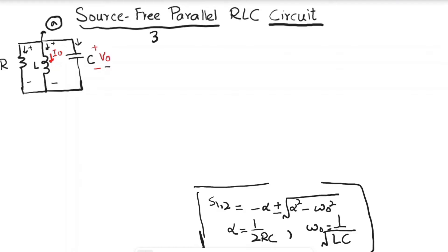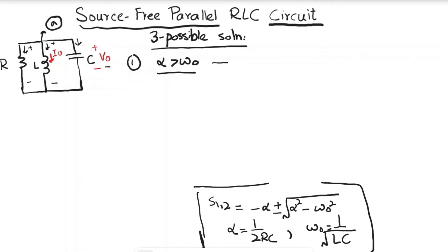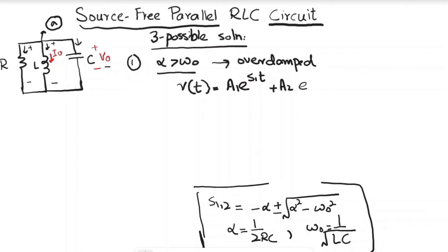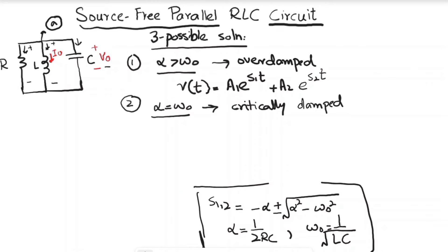Based on α and ω₀, there are three possible solutions. First, when α > ω₀ the response is overdamped: v(t) = A₁e^(s₁t) + A₂e^(s₂t). Second, when α = ω₀ the response is critically damped: v(t) = (A₁ + A₂t)e^(−αt).